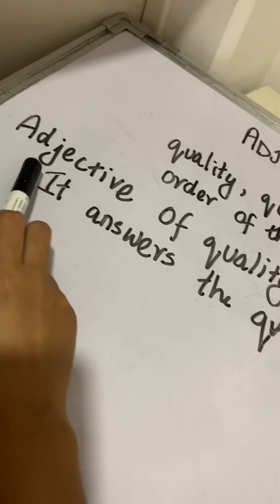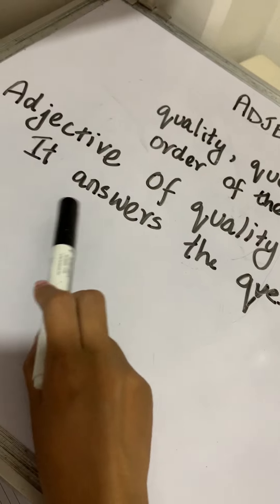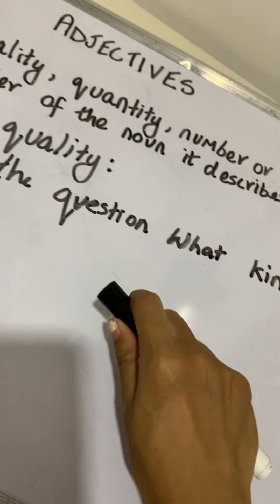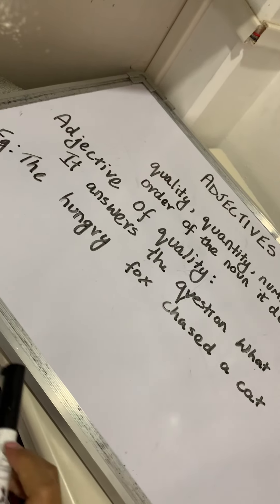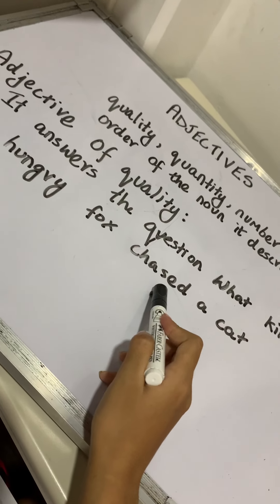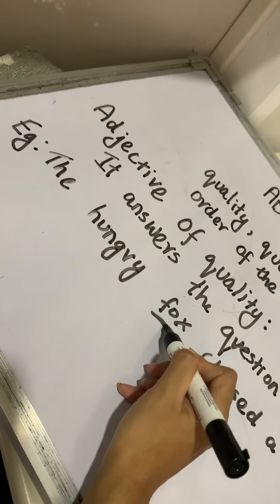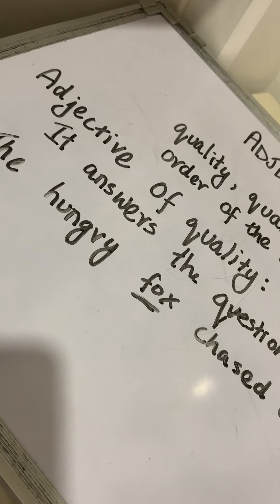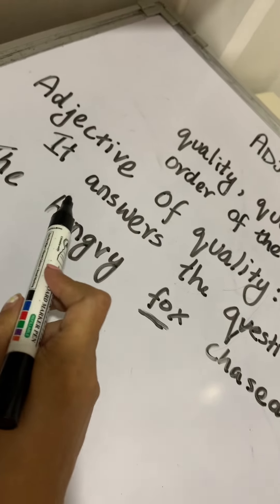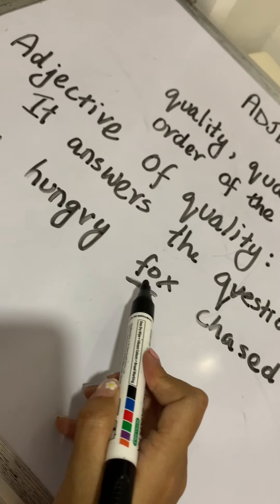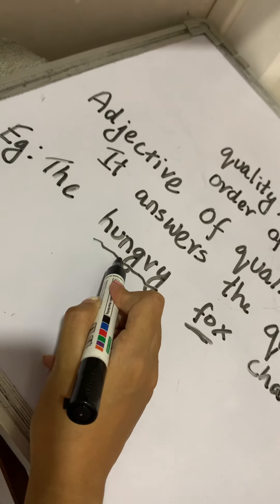First, we have adjective of quality. An adjective of quality answers the question "what kind?" For example: the hungry fox chased a cat. The noun here is fox. Adjective of quality answers the question what kind of a fox — hungry. So, hungry is the adjective here in this sentence.